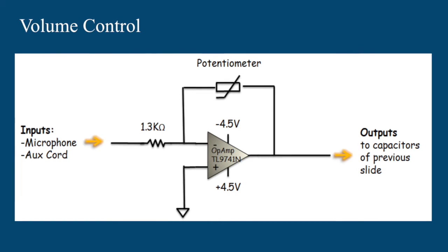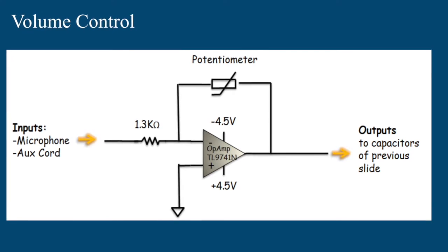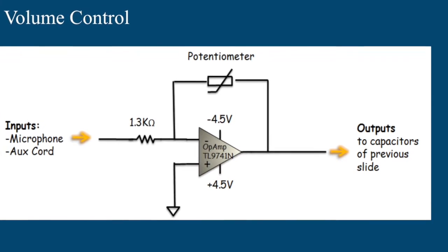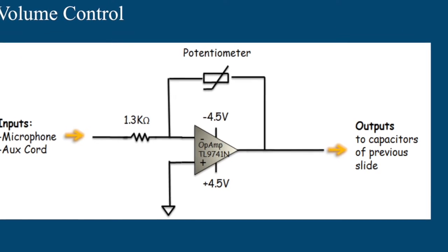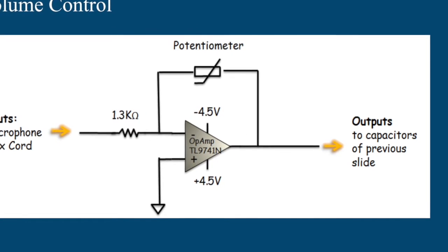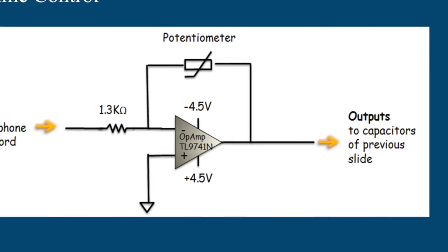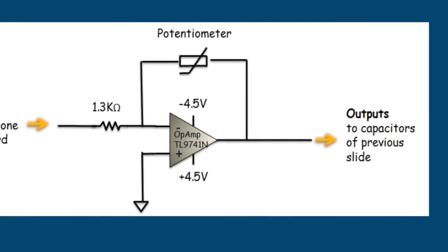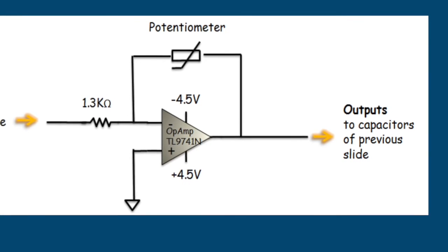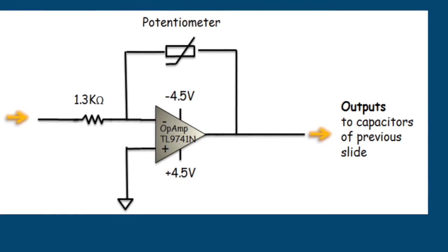This is the schematic for our volume control in our circuit which is the same for all of the volume controls in our circuit. This is an inverting op-amp where the gain is the ratio of the resistance of the potentiometer over the 1.3 kiloohm resistor. As the resistance of the potentiometer is decreased to zero that will decrease the output to zero so that there's no signal from this component.